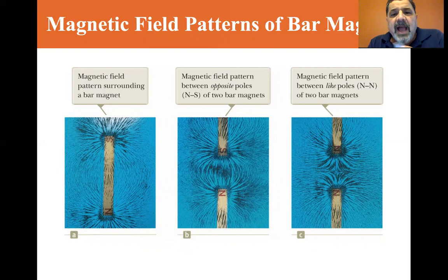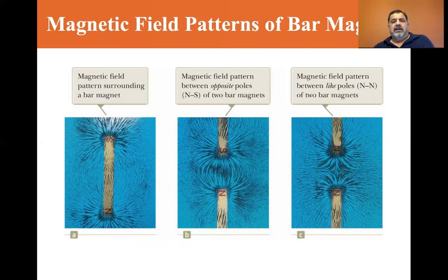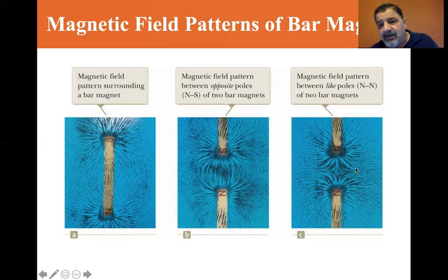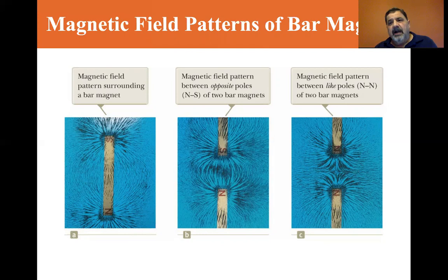Here are two different bar magnets showing a magnetic field pattern between opposite poles — north and south. North is on the bottom and south is on the top, and when you sprinkle iron shavings you get this pattern. If you put two norths or two souths together, you get a pattern where they oppose each other — the magnetic field pattern between like poles of two bar magnets.